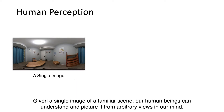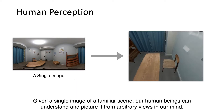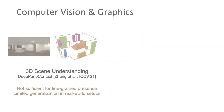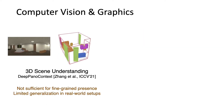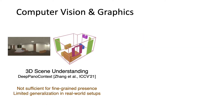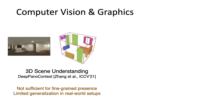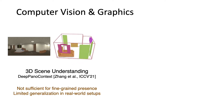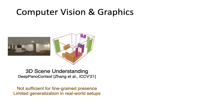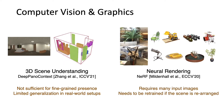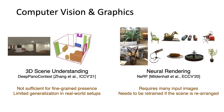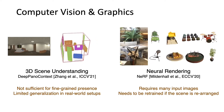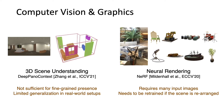Given a single image of a familiar scene, our human beings can understand and picture it from arbitrary views in our mind. While computer vision methods such as 3D scene understanding are good at scene layout and object arrangement prediction, they are not sufficient for fine-grained presence and also lack generalization in real-world setups. The Neural Radiance Field, or NeRF, achieves photorealistic results in novel view synthesis, but it requires many input images for training and needs to be retrained once the scene is rearranged.